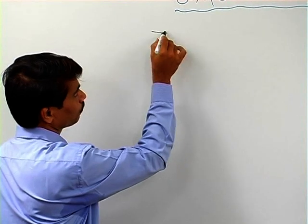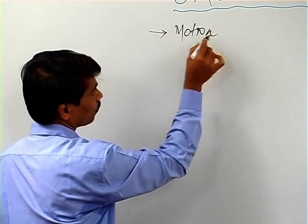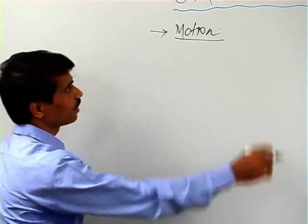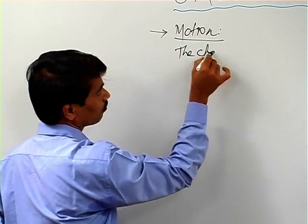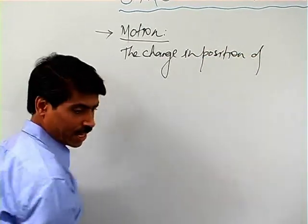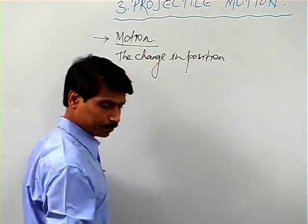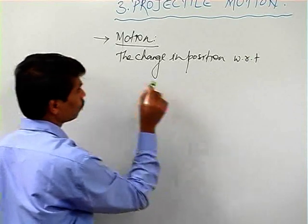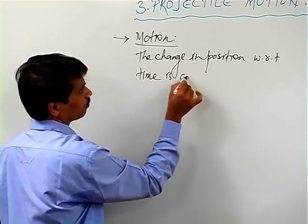Now the question arises, what is position? Position of a particle - it is a point in the space at which the particle exists at that instant of time. Let us write these definitions one by one. First, the meaning of motion: change in position with respect to time is called motion.